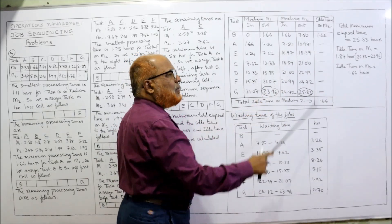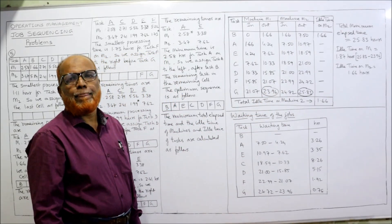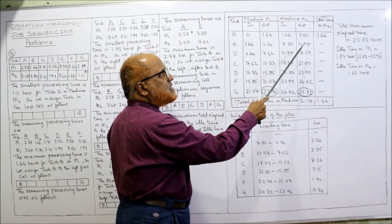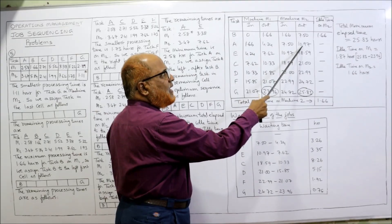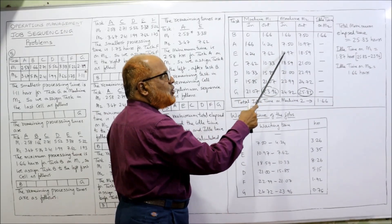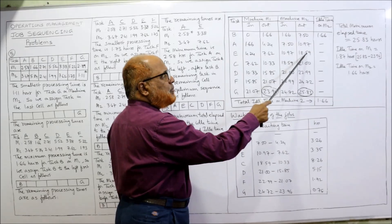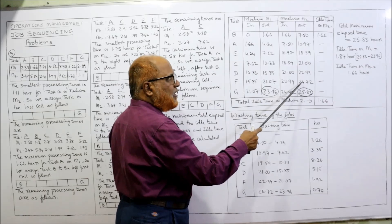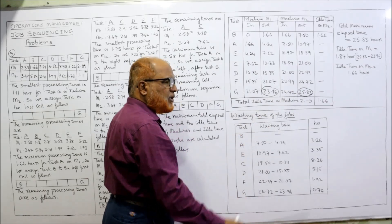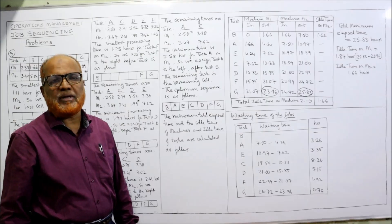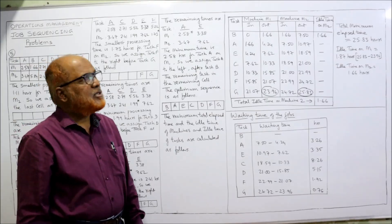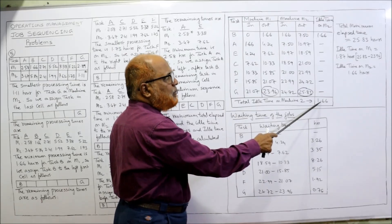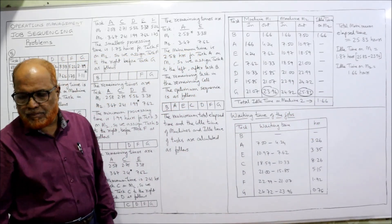For M2, the machine does not stop in between — it completes at 7.50 and immediately starts the next, then 10.97, 18.59, 21, 22.99, 24.72, and so on with no stoppages. Therefore the total idle time for M2 is only the initial 1.66 hours.